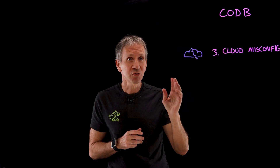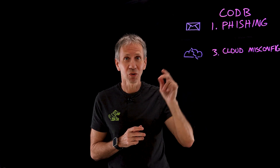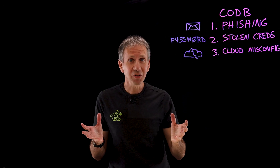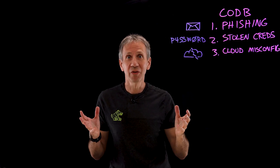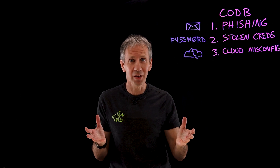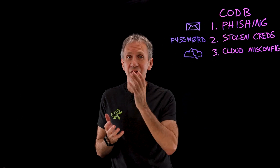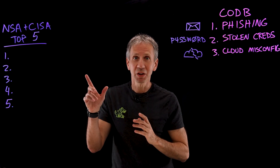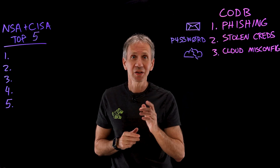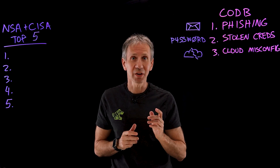A system is only as secure as it's configured to be, and according to the IBM 2023 cost of a data breach report, the number three reason for data breaches was cloud misconfigurations. It trailed just phishing and stolen credentials. So if misconfigurations are this common and this costly from a security standpoint, it bears that we take a closer look at the top five security misconfigurations according to the NSA and the Cybersecurity and Infrastructure Security Agency.